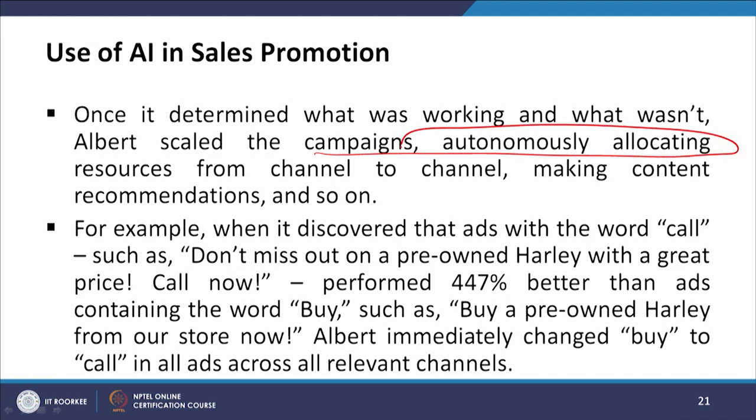Albert started working autonomously. For example, when it discovered that ads with the word 'call' — such as 'Don't miss out on the pre-owned Harley with a great price, call now' — performed 447 percent better than ads containing the word 'buy,' Albert immediately changed 'buy' to 'call' in all ads across all relevant channels.